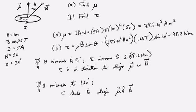The loop is circular, has a radius r equal to 1 meter. So first of all, we want to find the magnetic moment mu. Second of all, we want to find the torque.